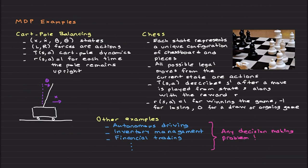Let's give more examples. Take a look at the cart pole balancing problem. X is the position state, X-dot is the velocity, theta is the angle of the pendulum, and theta-dot is its angular velocity. The problem is to balance a pole on a moving cart by applying forces to the left or right. T(S) represents the cart pole dynamics. You can say simply the reward is 1 for each time step the pole remains upright. These are simple examples — you can certainly define more complex reward functions.